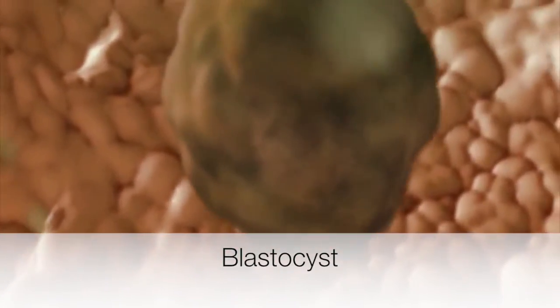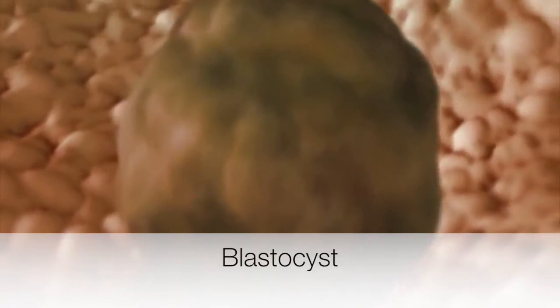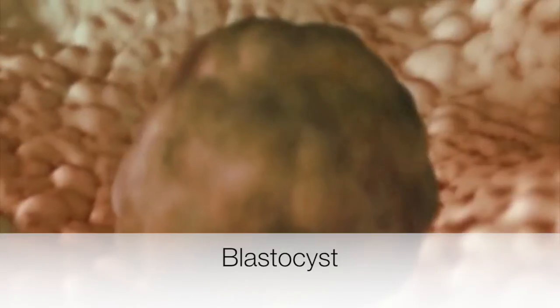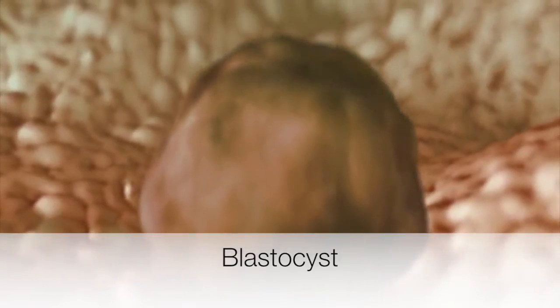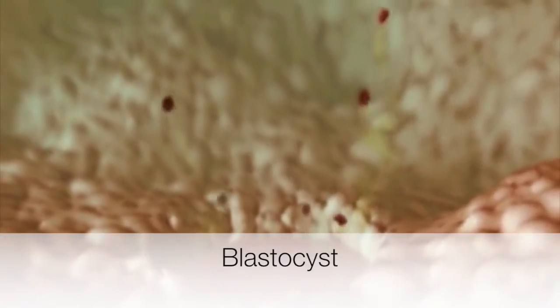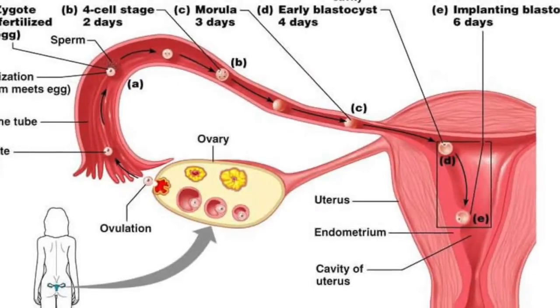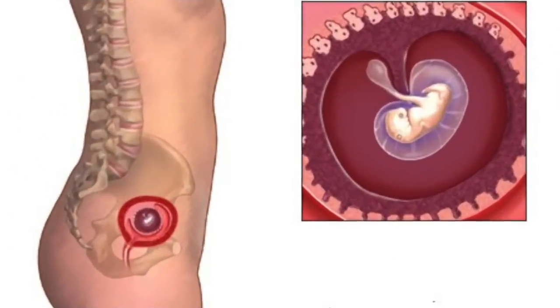It develops three layers: the ectoderm, the mesoderm, and the endoderm. The ectoderm develops into the skin and nervous system. The mesoderm forms many of the internal tissues and organs. The endoderm develops into several digestive organs and their lining. Once these layers appear, the ball of cells is called an embryo.